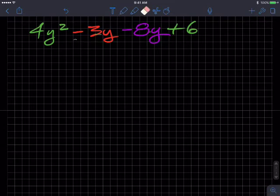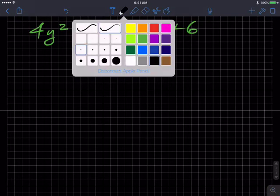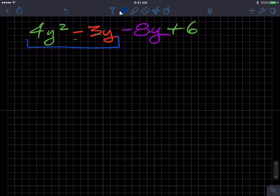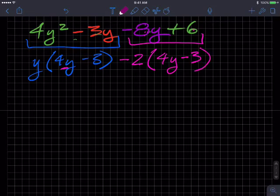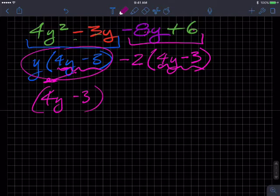Now we're going to factor by grouping. We're going to group those two and pull out a greatest common factor. It only appears to be a y: y times (4y minus 3). And then this guy over here, we're going to factor out a negative two. Negative two from negative 8y gives us 4y, and from plus 6 gives us negative 3. We have 4y minus 3 factored away. If I pull that away from this guy I'm left with y, and from this guy I'm left with negative two. So (4y - 3)(y - 2).